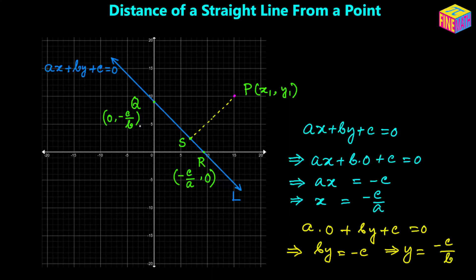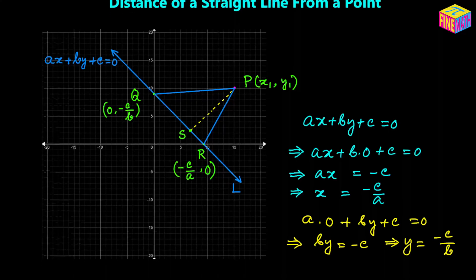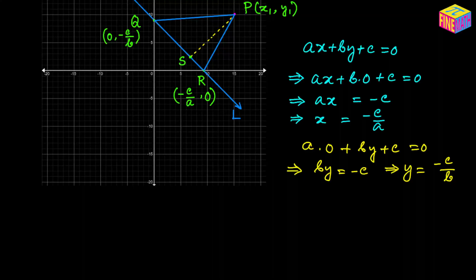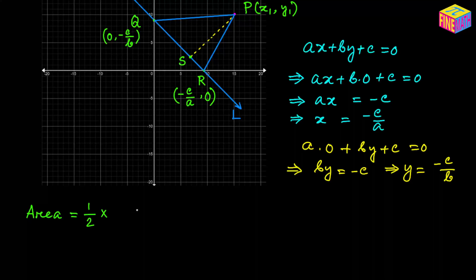Now we are going to use the formula for area of a triangle using the coordinates of its three vertices. We have triangle PQR and we will calculate its area in two different ways, then equate them to find PS. The first formula is area equals half times base times height. Using QR as the base and PS as the height, we get area equals half times QR times PS.